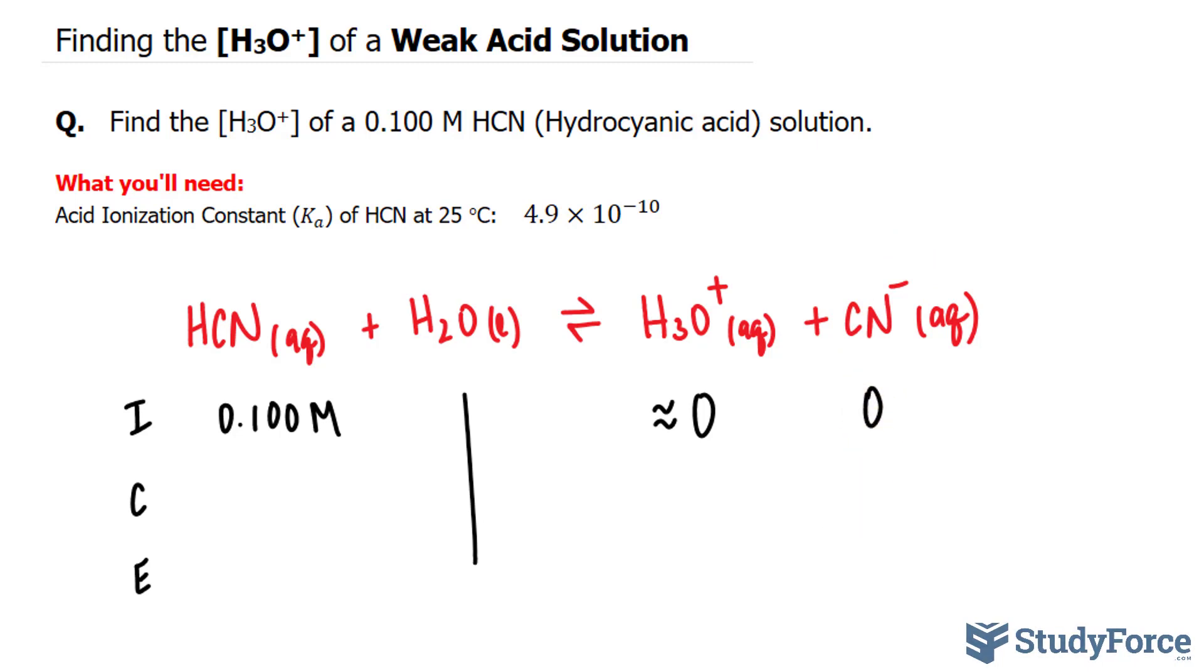The next thing that I'll do is set any one of these molecules as a variable X in this row for change. So I'll set this as X and I'll create ratios to find out what the change here will be and the change there. Since this is a 1 to 1 ratio, we'll have X here, but we're comparing reactants with products. So we'll write down negative X and it's a 1 to 1 ratio between HCN and CN minus, so that's also negative X.